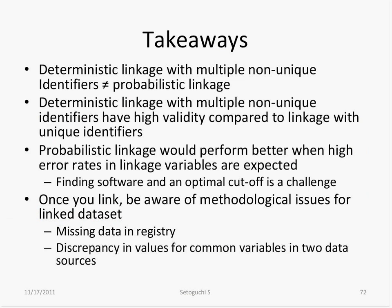Key takeaways: deterministic linkage with multiple non-unique identifiers is not the same as probabilistic linkage. Deterministic linkage with multiple non-unique identifiers has high validity compared to linkage with unique identifiers. Probabilistic linkage performs better when high error rates in linkage variables are expected. Challenges include finding appropriate software and selecting an optimal cutoff. Once linked, you must still address methodological issues such as missing data in the registry and discordant values between datasets.